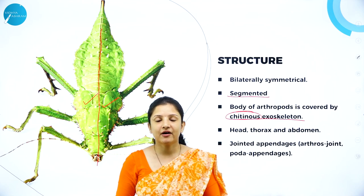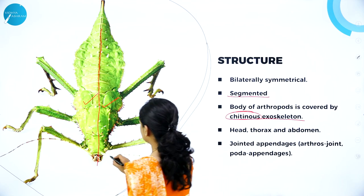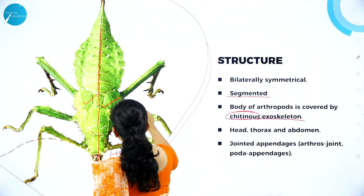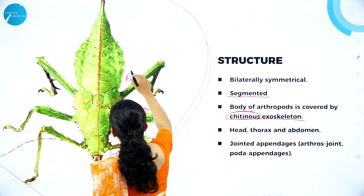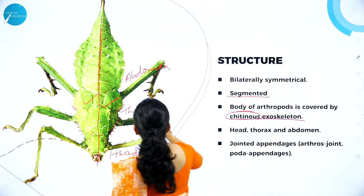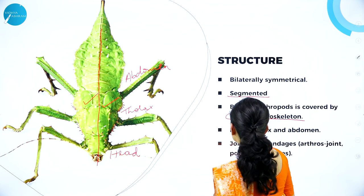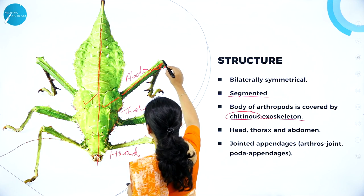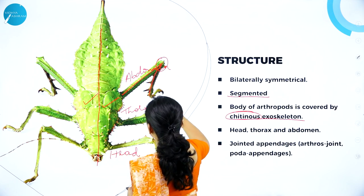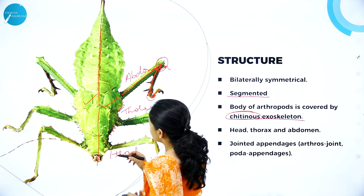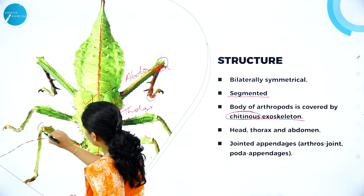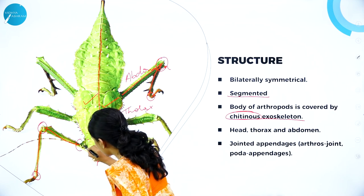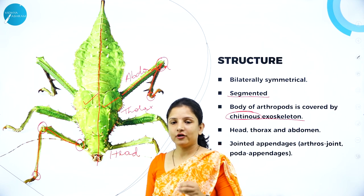The body of insects is divided into head, thorax, and abdomen. They have jointed appendages — you can see appendages jointed at specific points. Each appendage has joints, which is why they are called arthropoda.